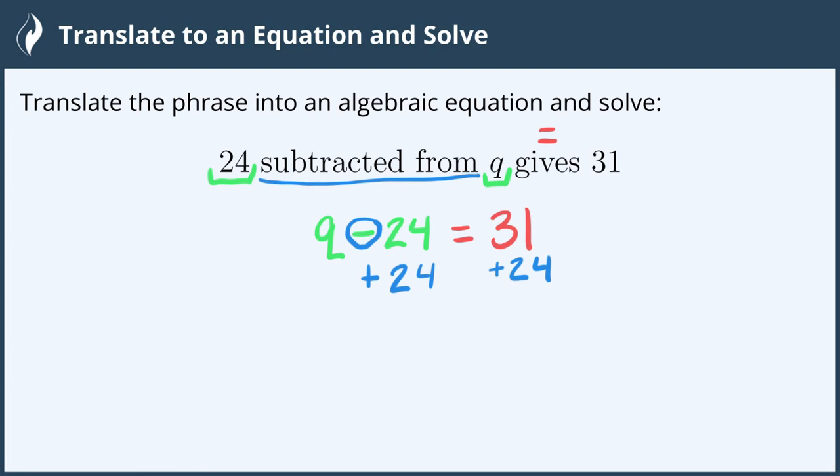Minus 24 plus 24 makes 0. Q plus 0 is Q, so we are left with Q. And then on the right hand side we will add 31 plus 24 which gives 55.